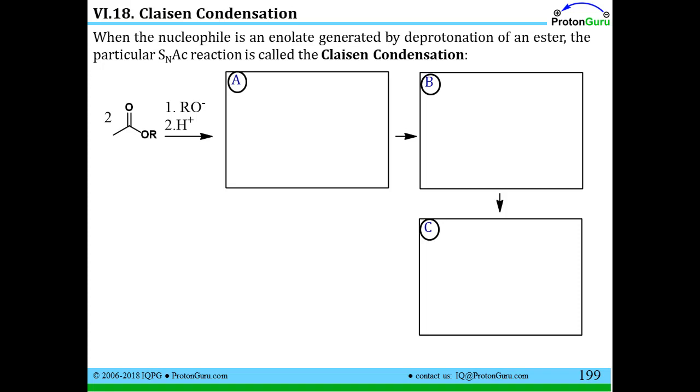When nucleophiles react with esters, they most commonly do the nucleophilic acyl substitution reaction, not the simple nucleophilic addition protonation that ketones and aldehydes do. This is what we call the type C reaction. And that's exactly what we're going to see when we use an enolate as the nucleophile to react with the ester. And this is going to be a reaction called the Claisen condensation.